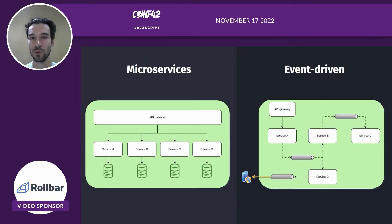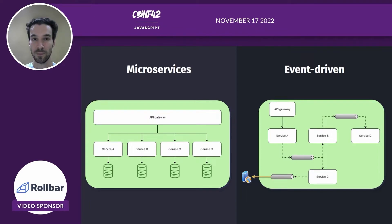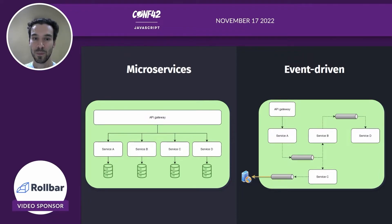Microservices are when you have separate deployments for each service. Usually each service is only responsible for a small unit of work and will have its own store. It will communicate with other services via HTTP requests or messaging. The event-driven approach is similar to microservices, but usually you don't have direct communication between them. Instead, each service will emit an event and then it simply doesn't care. There can be listeners to this event, but there can be none. If the event is consumed by someone, it can again produce another event that can be consumed by another service and so on.